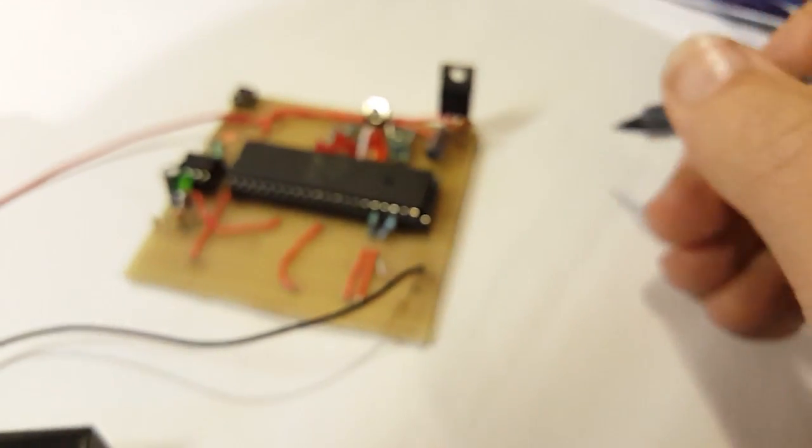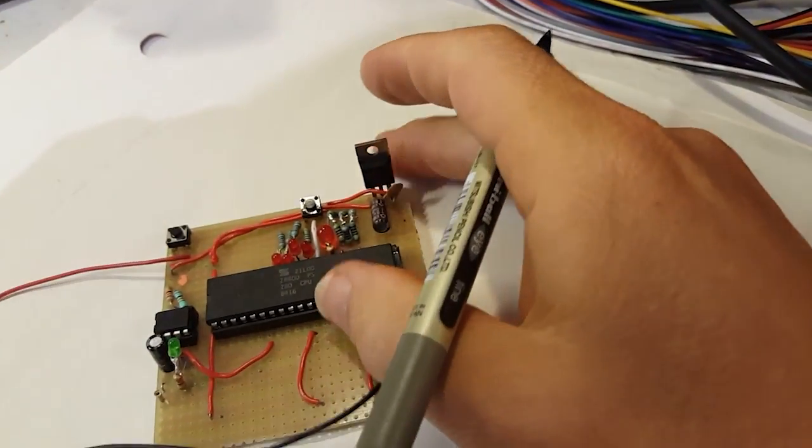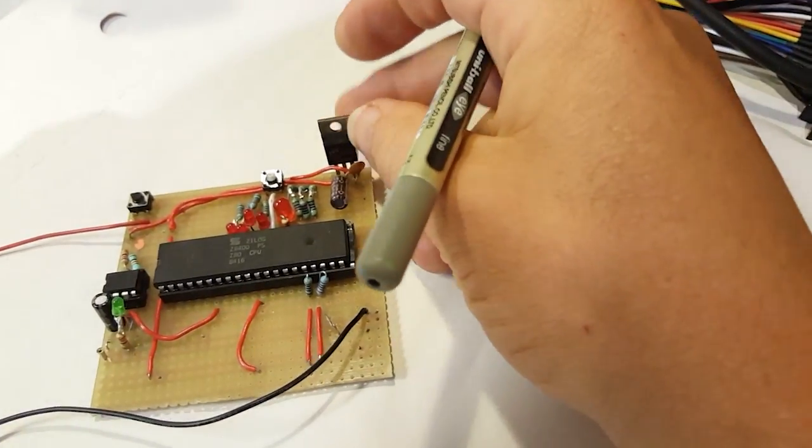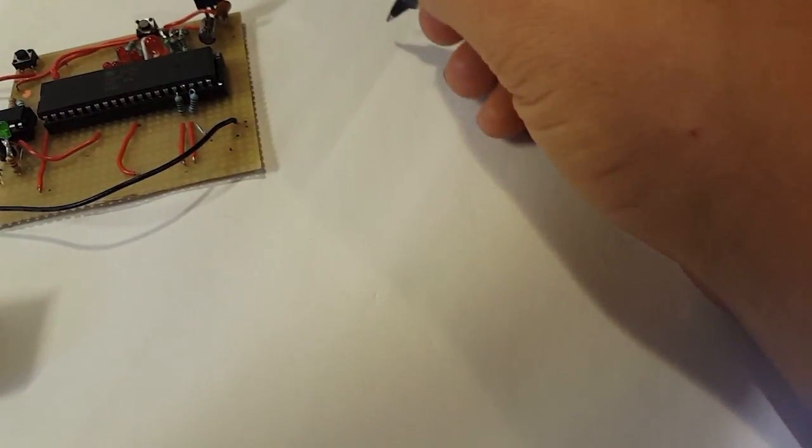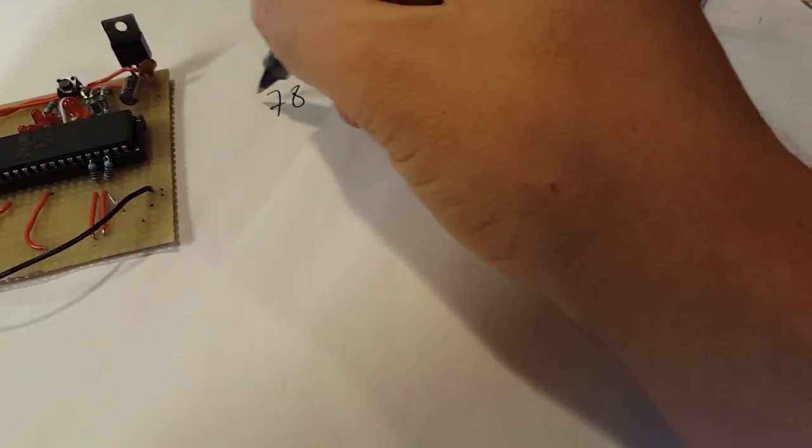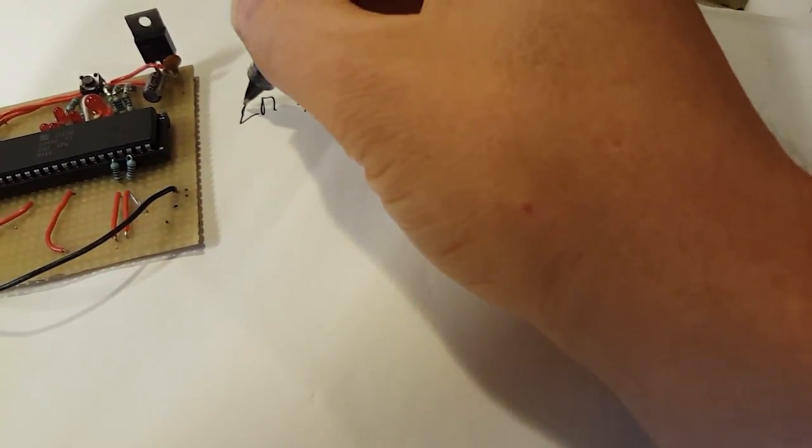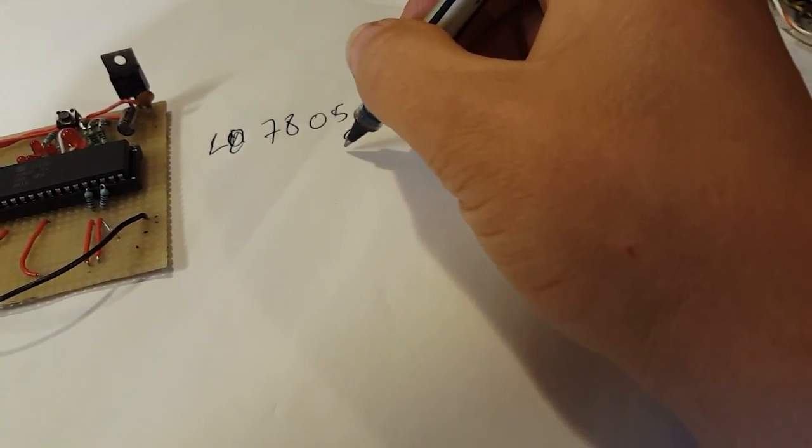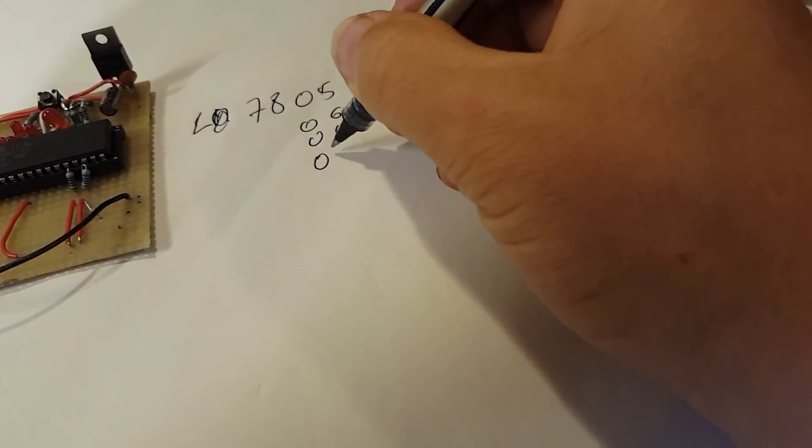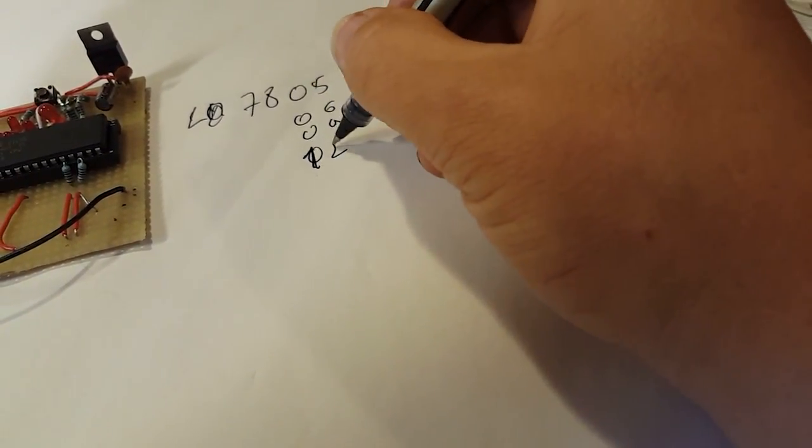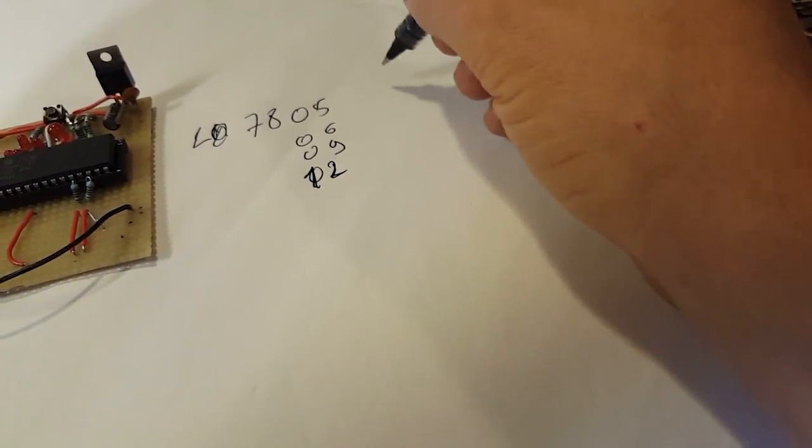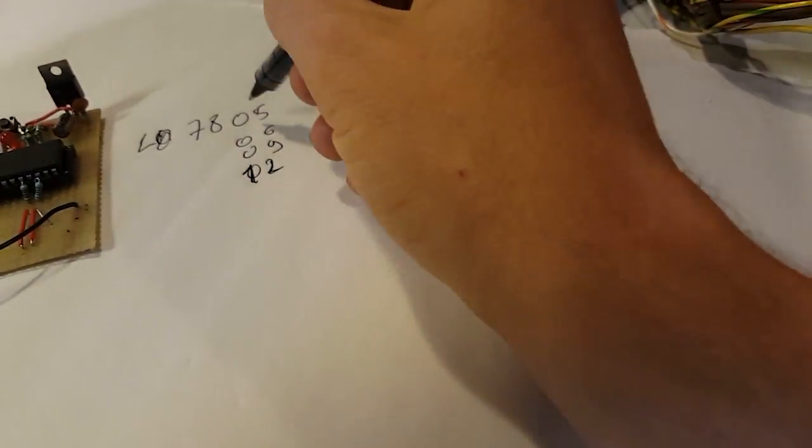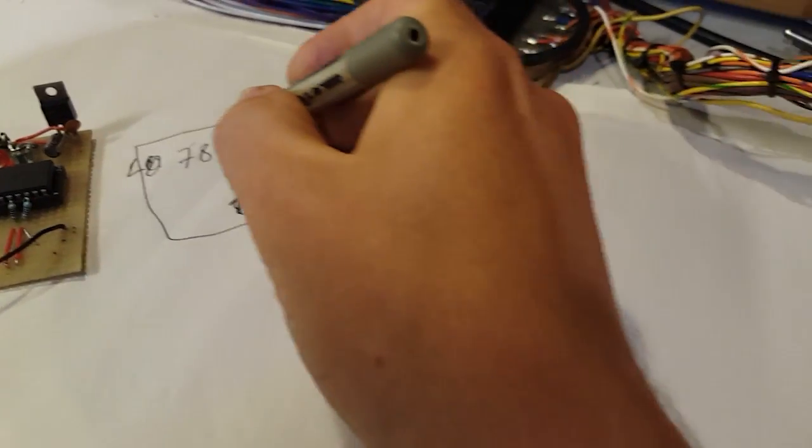These are very common parts and very handy - a very easy but inefficient way to regulate your power because it generates heat. But you see these everywhere. Usually you'll have 78 and then two numbers like 05, 06, 09, 12 - I'm sure there's a lot of variants. You also have the 79 series which provides minus voltage.